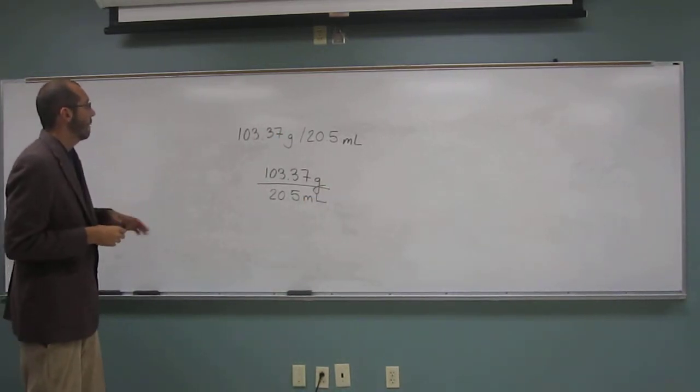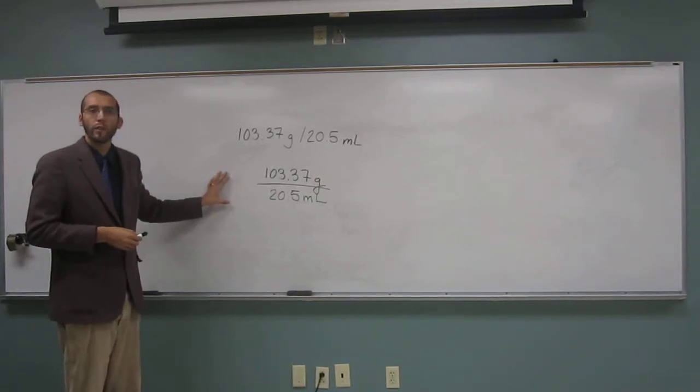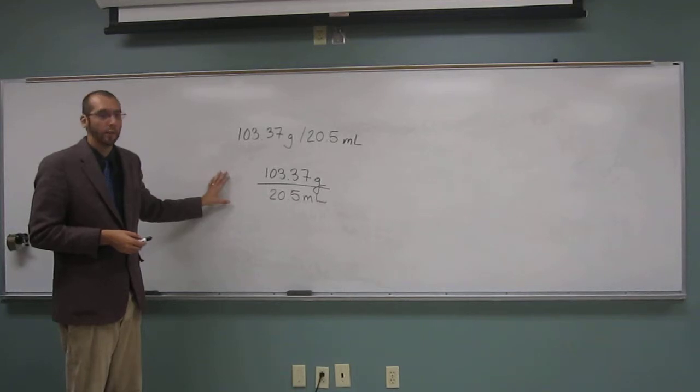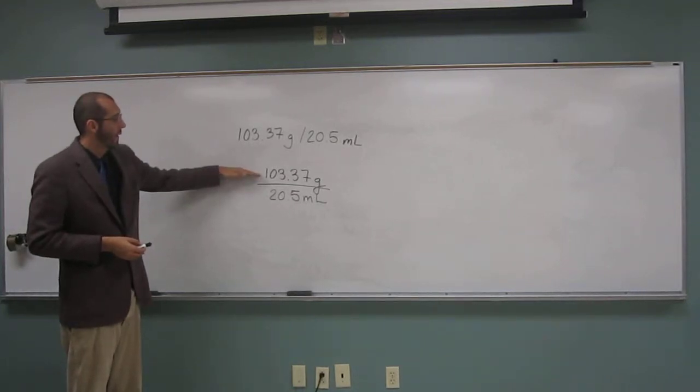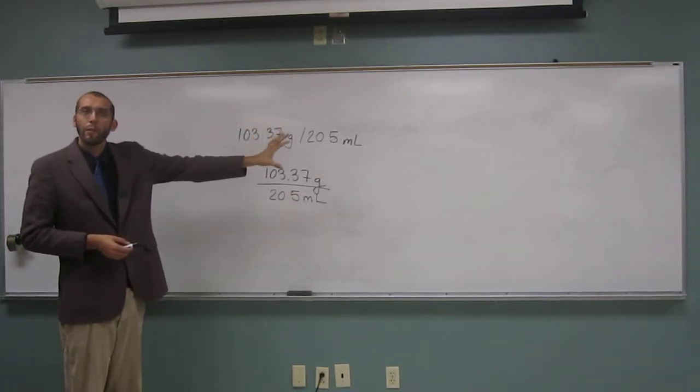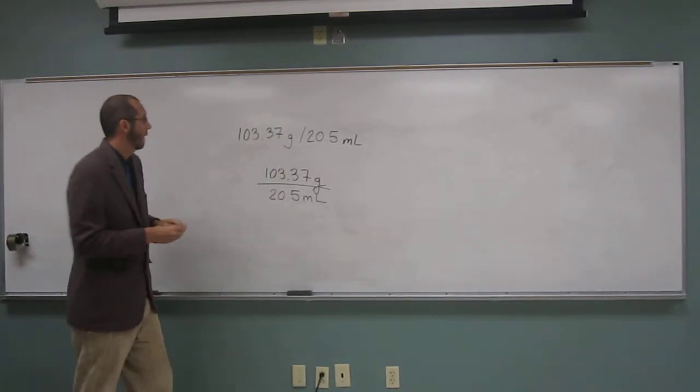So what were the significant figure rules when we're doing division? Go to the what? Least amount of significant figures. So how many does this one have? Five. And this one? Three. So this answer is going to go to three.